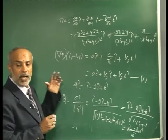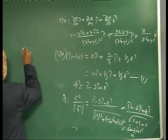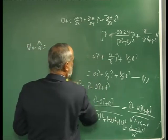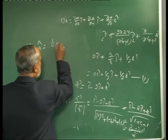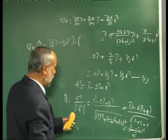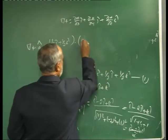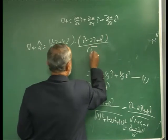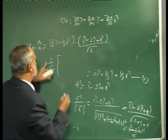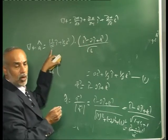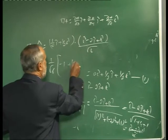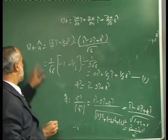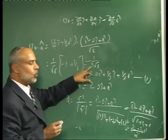Directional derivative = ∇φ · â = (1/2j + 1/2k)·(i - 2j + k)/√6 = (1/√6)(0 - 1 + 1/2) = -1/(2√6). This is the required directional derivative.